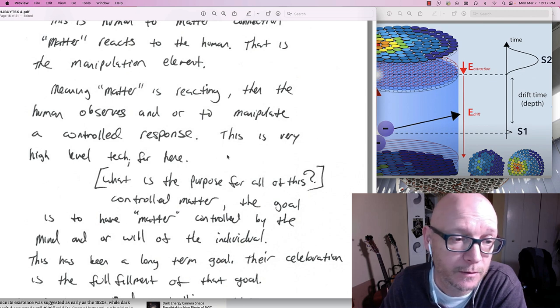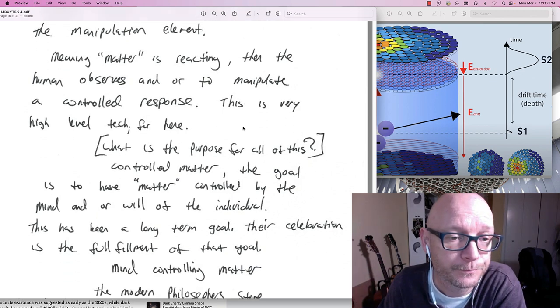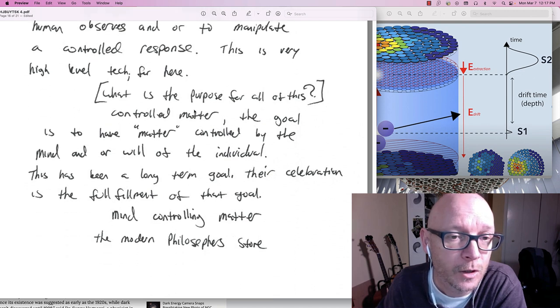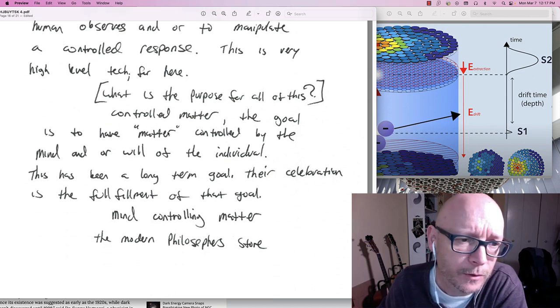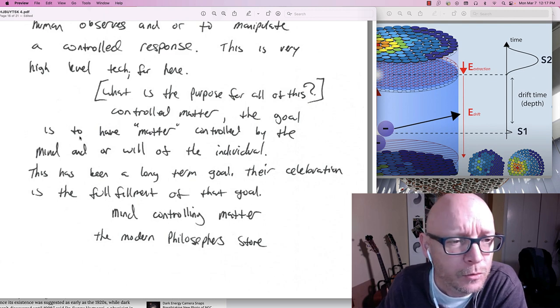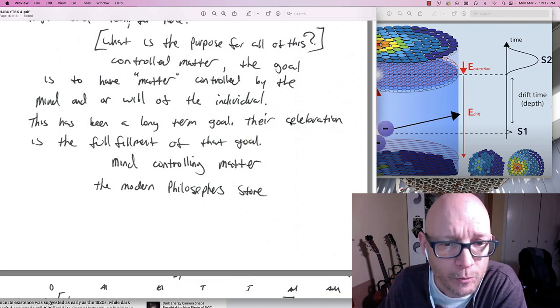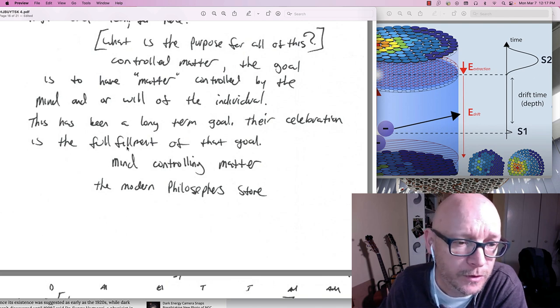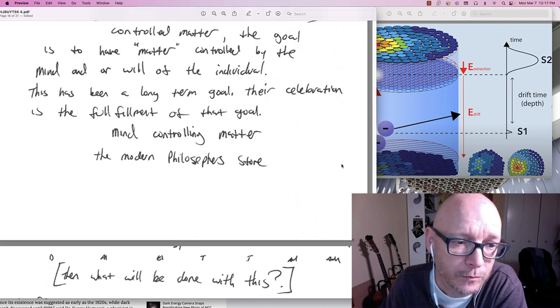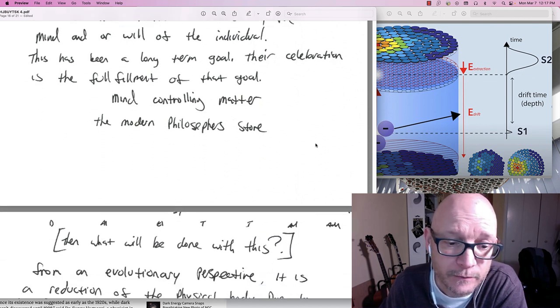What is the purpose of all of this? So I wonder. Controlled matter. The goal is to have matter controlled by the mind. Mind and or will. The individual. This has been a long term goal. A collaboration. Is the fulfillment of that goal. Mind controlling matter. The modern philosopher's stone.